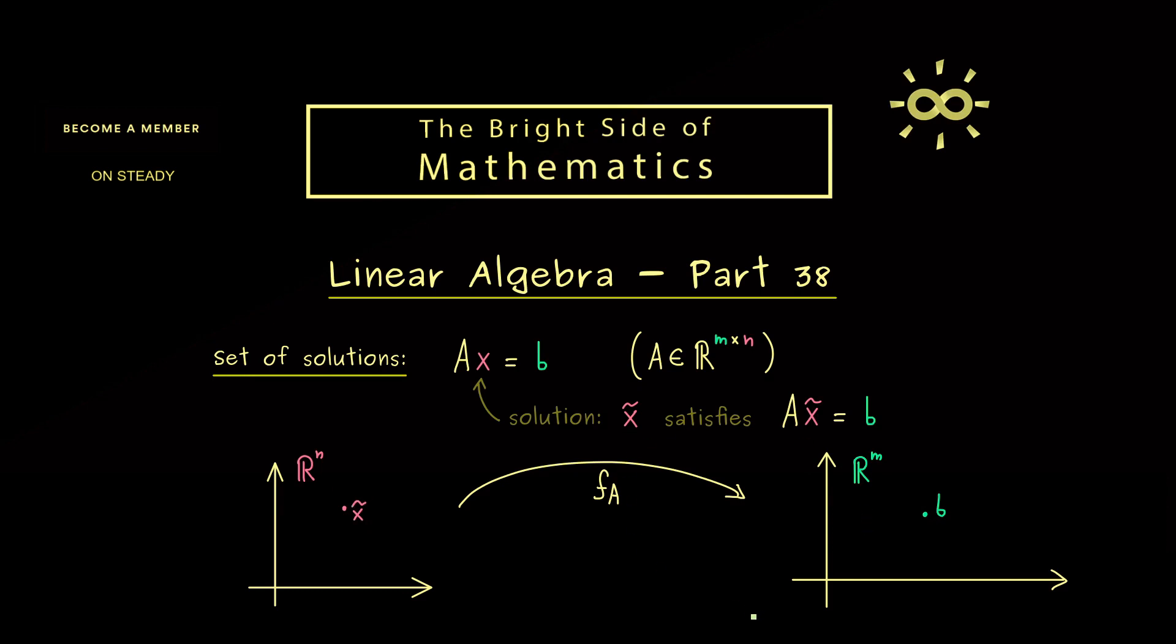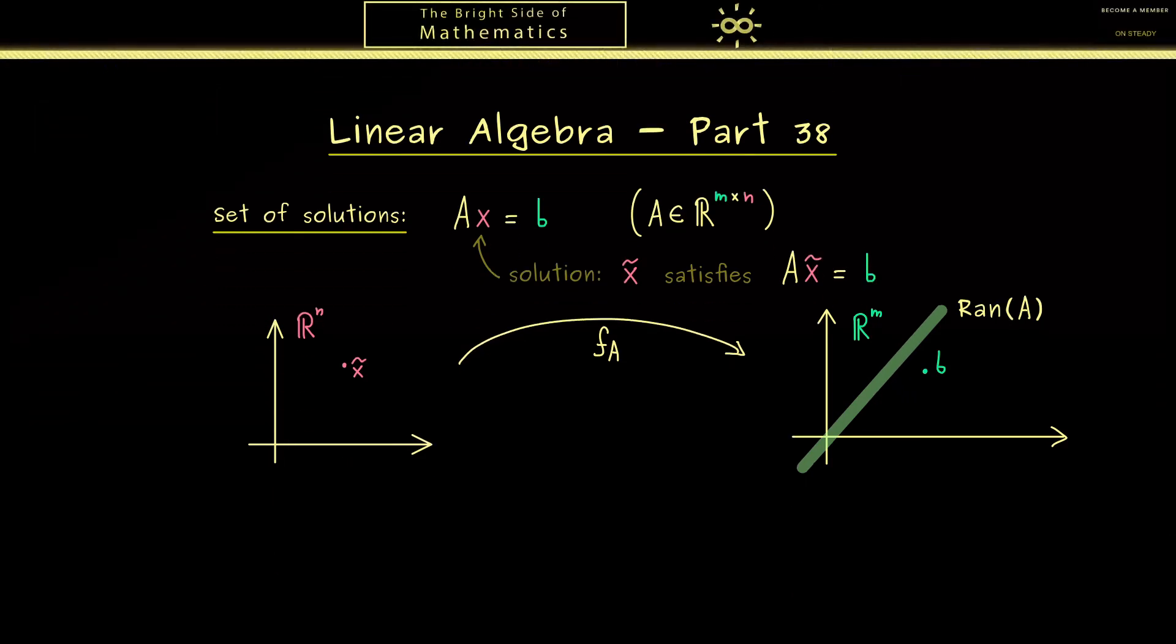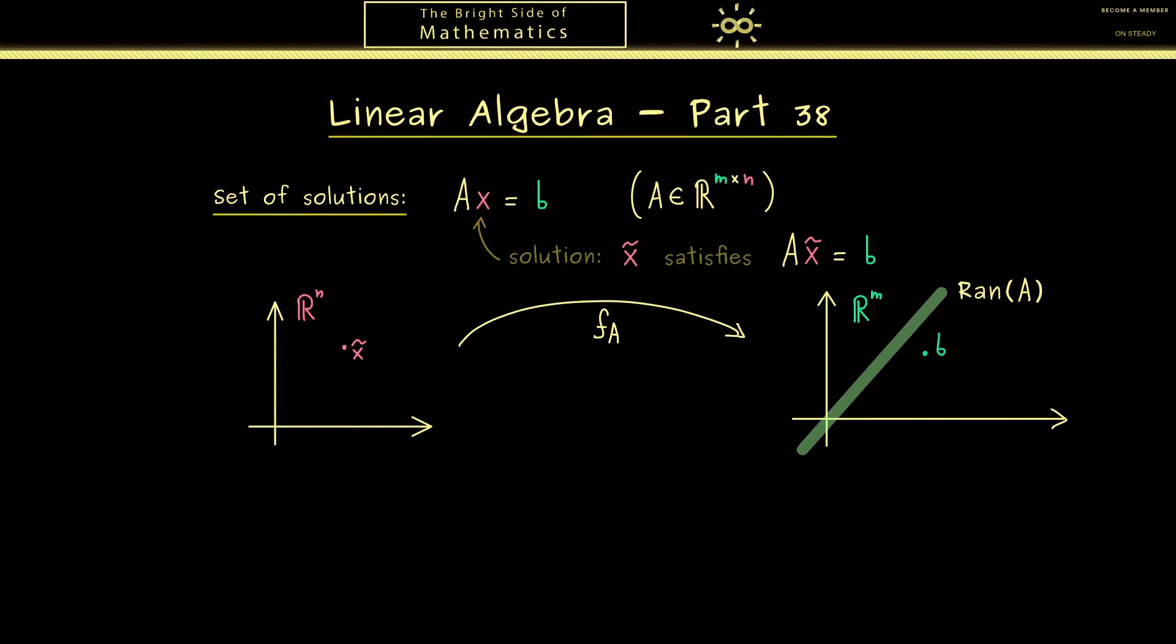In our picture we can just put two dots for the two elements. Now I can tell you that we have learned in former videos that the range of A is a subspace on the right-hand side. Therefore, we can conclude that the solution set is empty if b does not lie in the range of A.